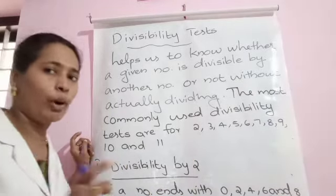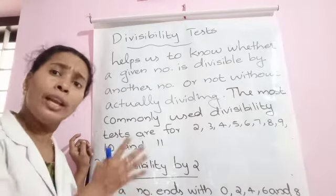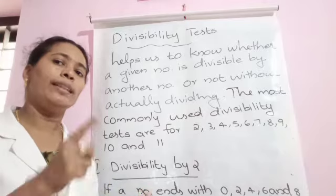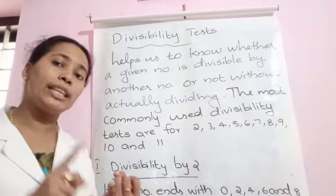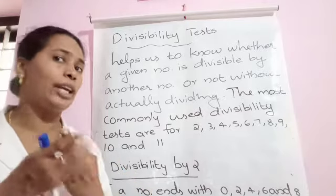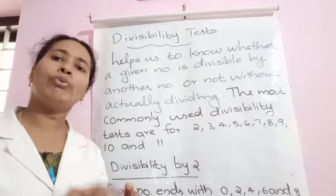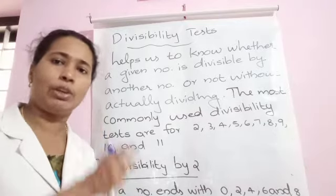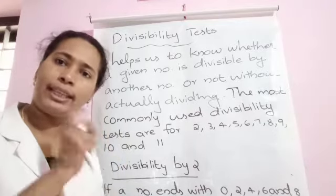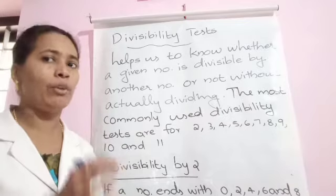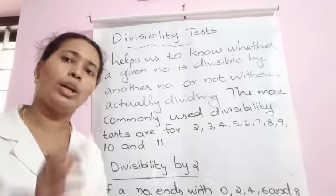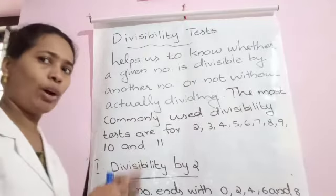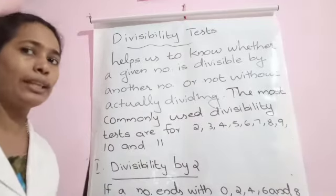The teacher is not following the textbook order — we can group them. First, the teacher is grouping the divisibility tests of 2, 5, and 10 together, because 2, 5, and 10 are very easy. By seeing the ones digit or ending digit itself, we can predict whether they are divisible by 2, 5, or 10.